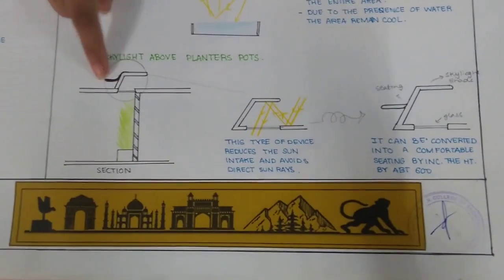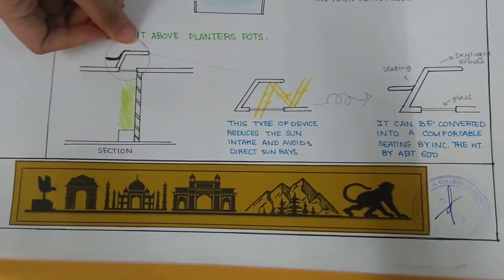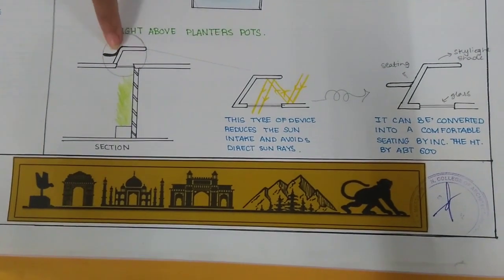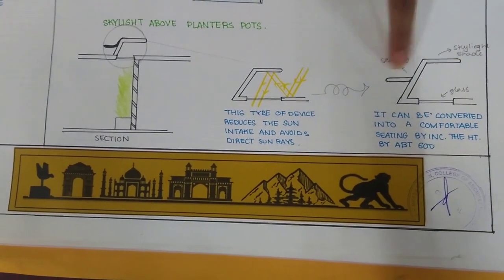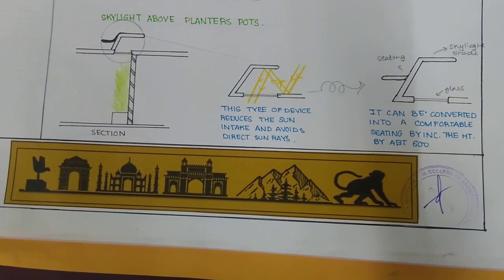On the uppers where there are planters below, I have provided a small skylight in this manner which has a small seating on this side. So it will be on a comfortable height and a seating is provided.